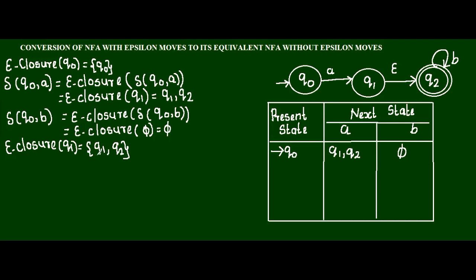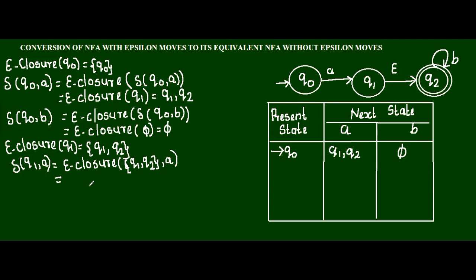Next step, I want to find the transition for {Q1, Q2}. First, I am going to find the transition for Q1, Q2 with input A, then find the null-closure for the resultant state. Q1, if input is A, there is no next state. Q2, if input is A, there is no next state. So it is null-closure of MT, which is always MT. I am going to fill this in the table: Q1, if input is A, next state is MT.